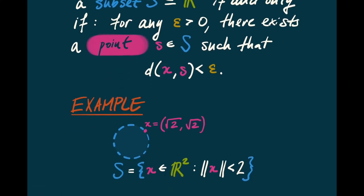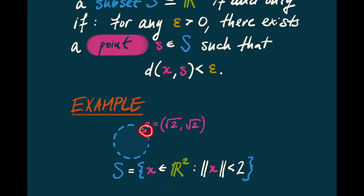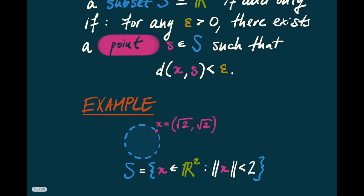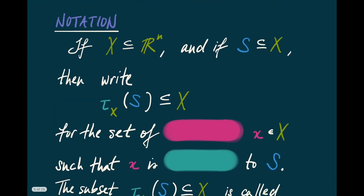Here's an example. We're going to think about the subset S of R2, the points of distance strictly less than 2 from the origin. Now contemplate the point x with coordinates (√2, √2), whose distance from the origin is exactly 2. So x is definitely not an element of S. Nevertheless, x is close to S — for every epsilon greater than 0, among the points that are epsilon-close to x, there is inevitably some point of S. Now, if x is a subset of Rn and S is a subset of x, we write τ_x(S) for the subset of x consisting of those points close to S. This subset is called the closure of S.